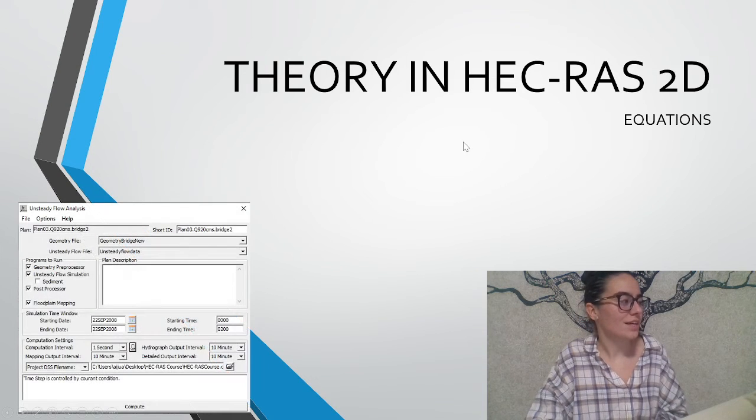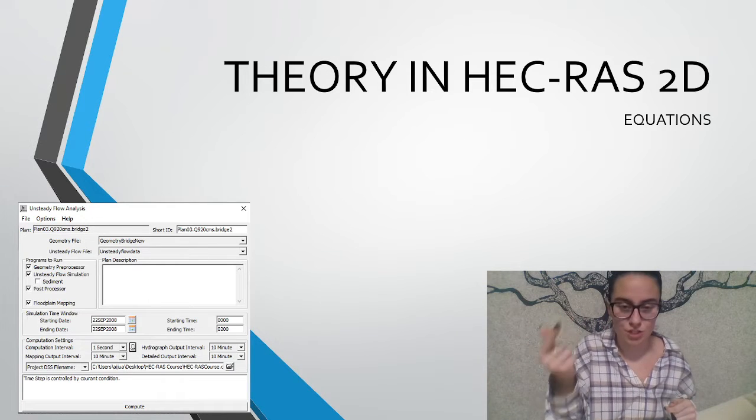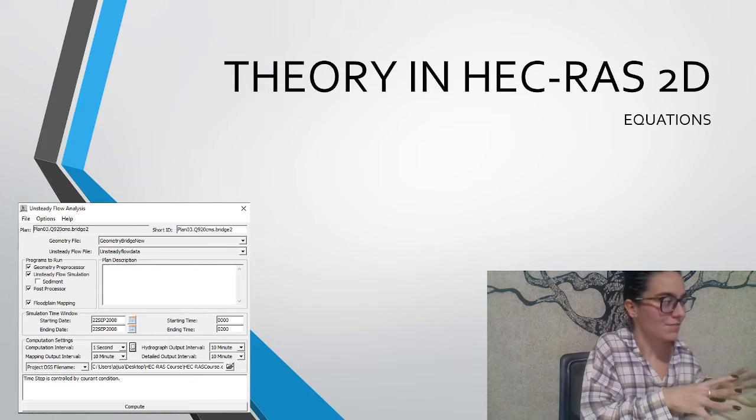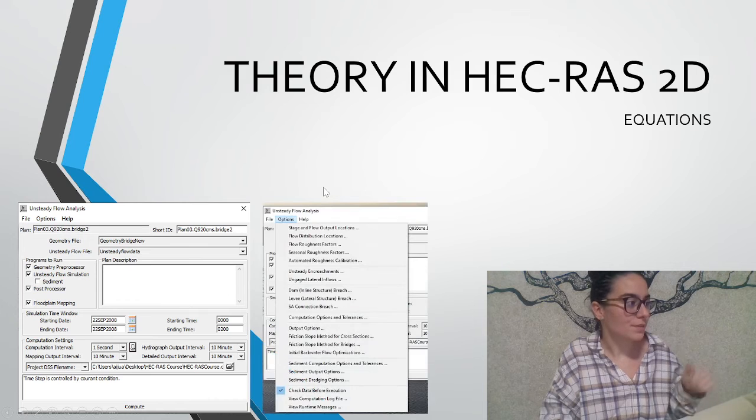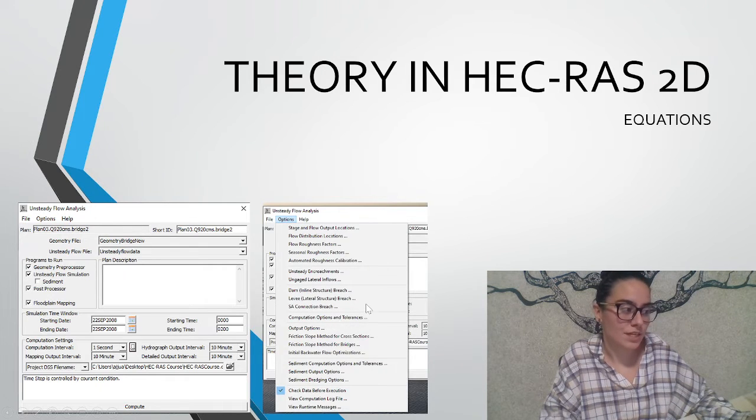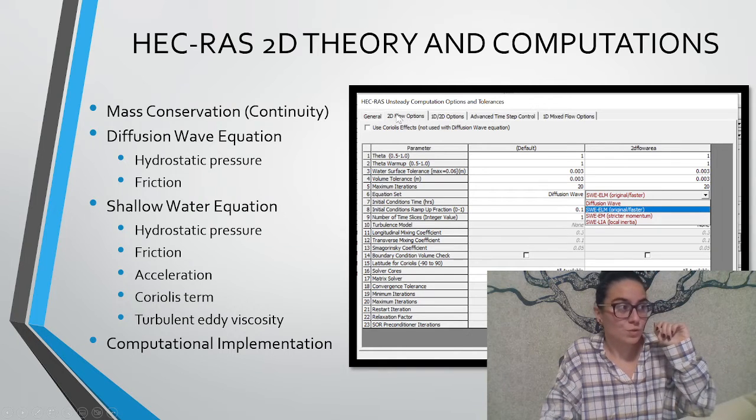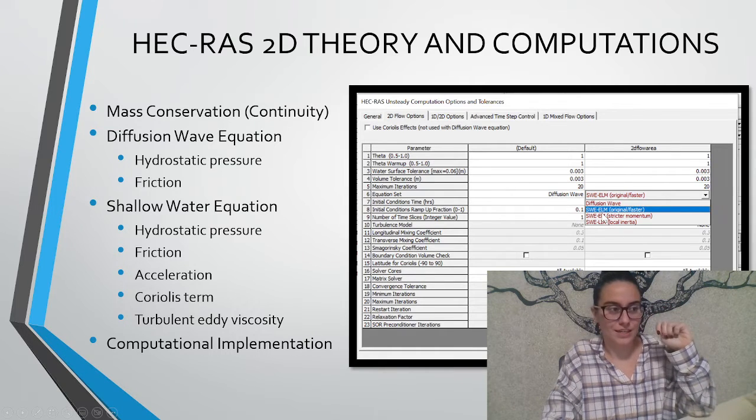When we have our terrain ready and our geometry ready and our boundary conditions ready, we go to this Unsteady Flow analysis window and click options up in the left. We can choose the computation options and tolerances. This window shows apps and we can go to the 2D flow options and if we click in the equation set we have four options available.